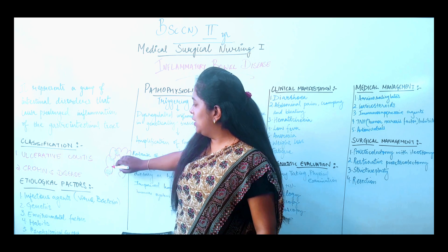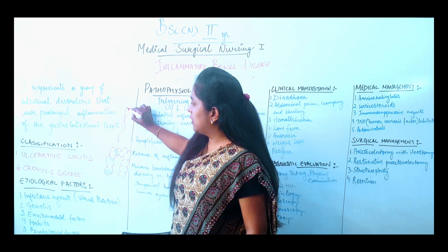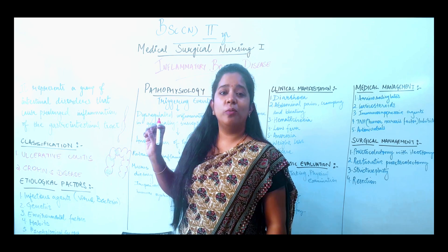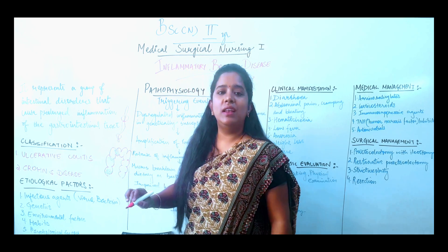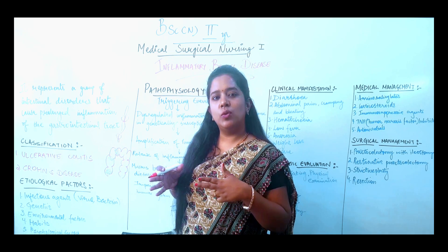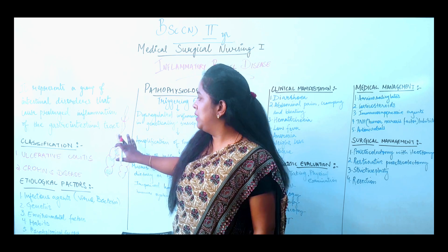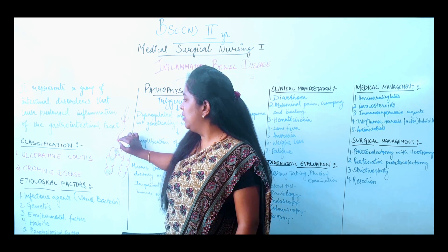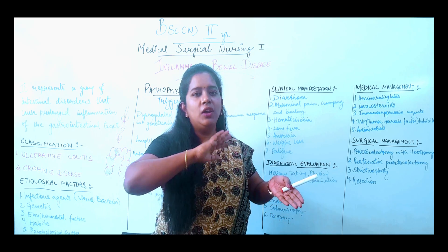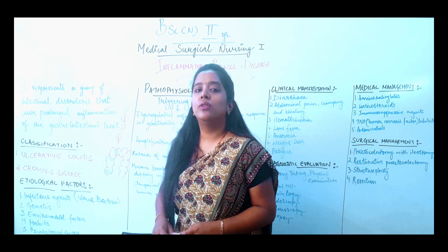For Crohn's disease, strictureplasty is performed when areas of the bowel have narrowed due to inflammation — the stricture is repaired to restore the lumen width. However, if the tissue is completely damaged, resection surgery is done — the damaged segment is cut out and the surrounding healthy areas are joined. Since Crohn's disease has alternating normal and abnormal segments, these can be resected and rejoined.